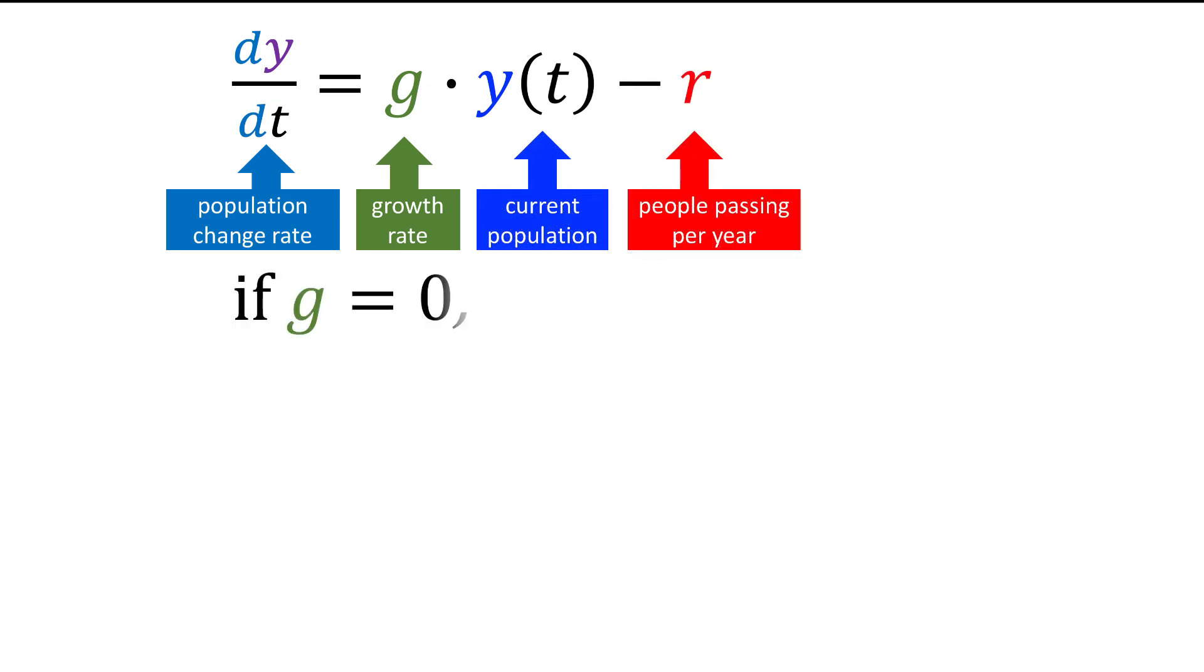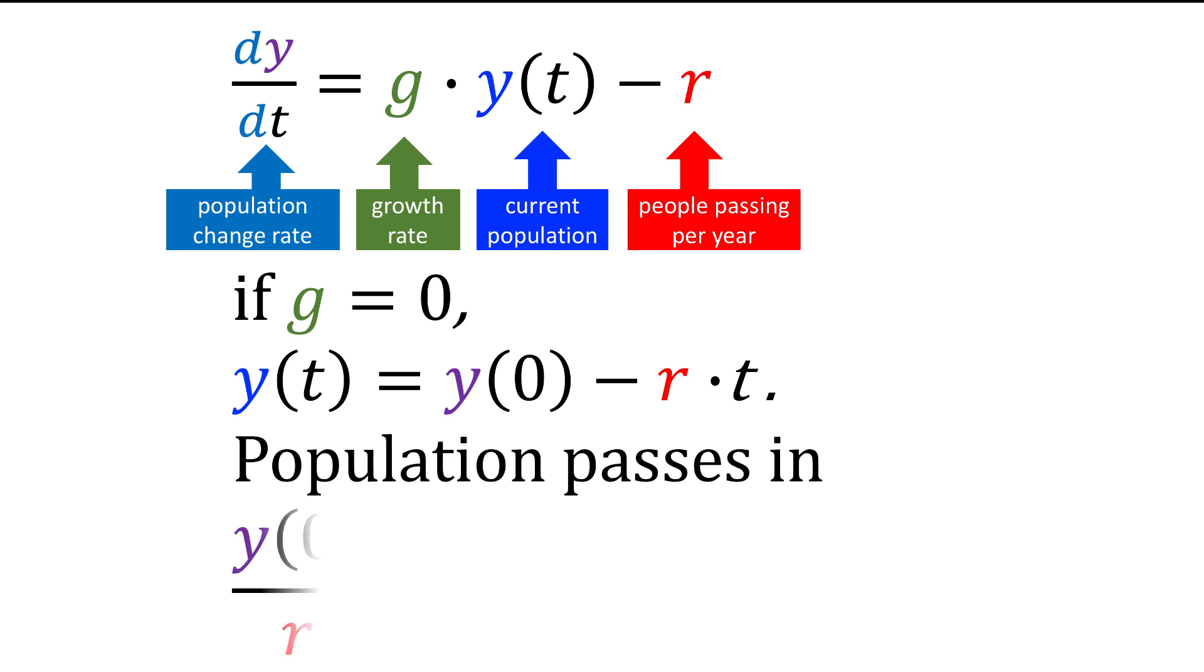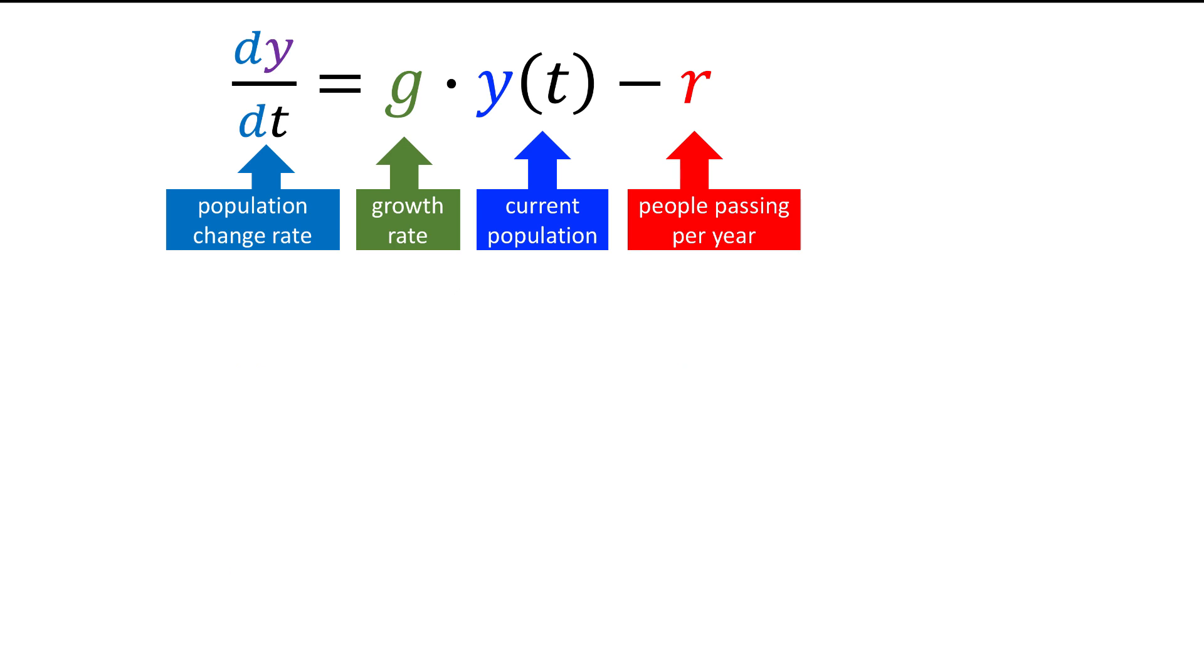If g is 0, y of t equals y initial minus r times t. The whole population passes by in the initial population divided by r years. Otherwise,